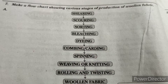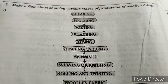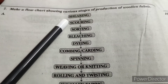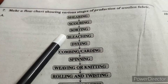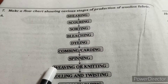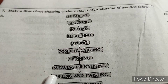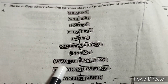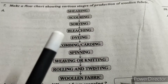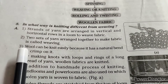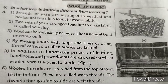Seventh question: make a flow chart showing various stages of production of woolen fabric. The stages are: shearing → scouring → sorting → bleaching → dyeing → combing or carding → spinning → weaving or knitting → rolling and twisting → woolen fabric. Write this flow chart.